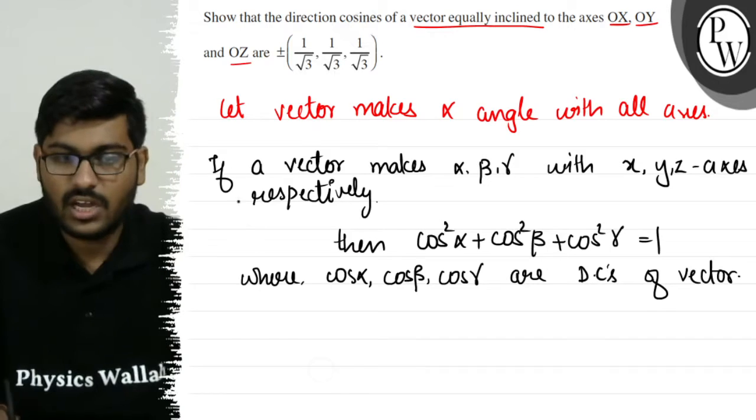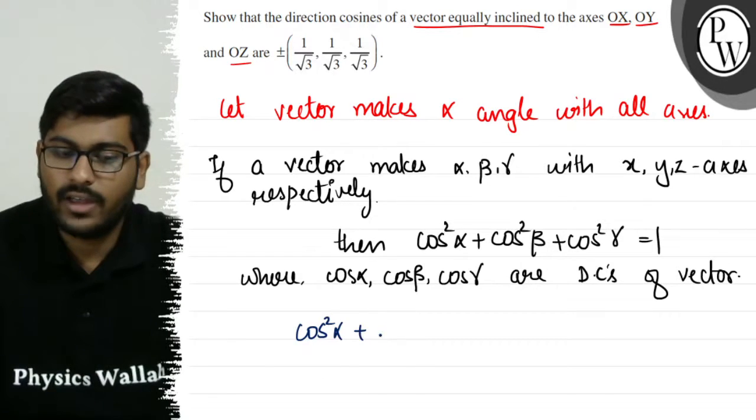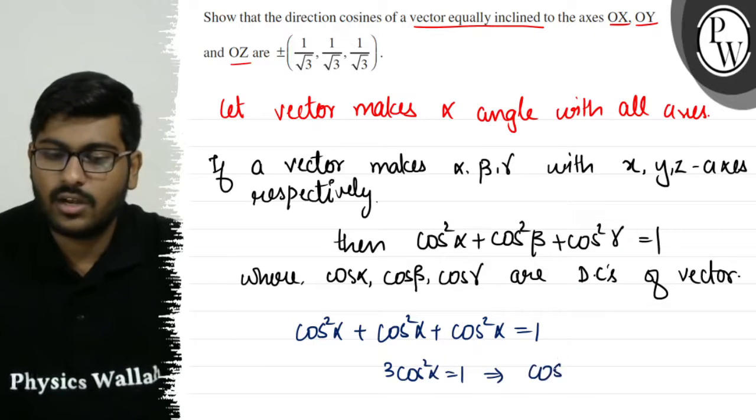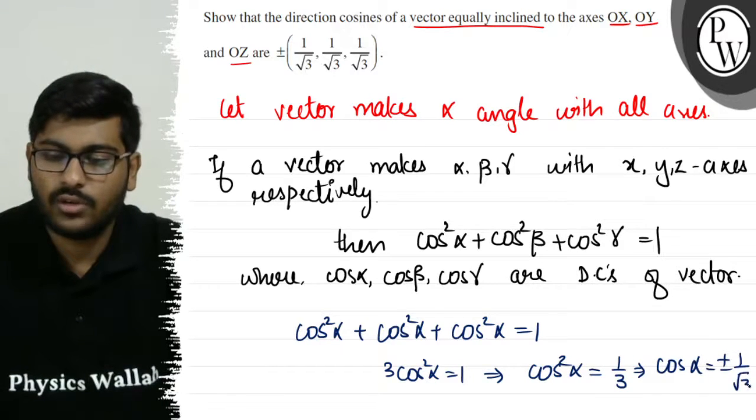So what do we show here? We show here cos²α, y axis also alpha, z axis also alpha is equal to one. So 3cos²α will become 1. cos²α = 1/3, so cos α = ±1/√3.